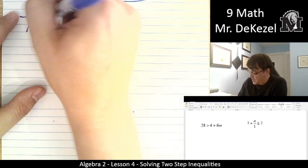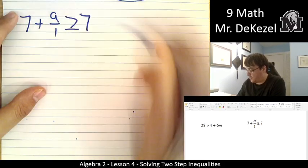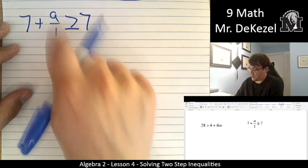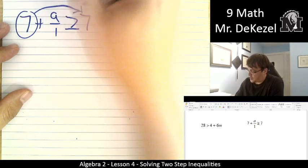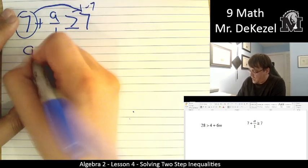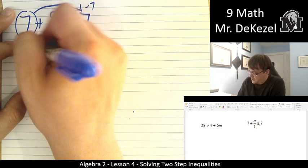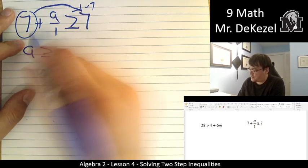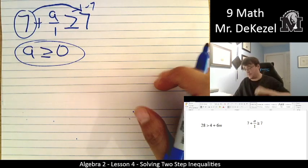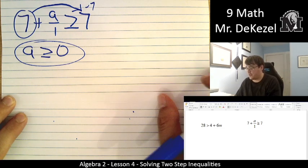So we have 7 plus a divided by 1 is greater than 7. Greater than or equal to 7. We're going to go ahead and try to get a all by itself. We're going to move the 7 across. Okay. I see where this is going. We're going to subtract 7. So a and a divided by 1 is just a. So a is greater than or equal to 7 minus 7 is 0. When something is divided by 1 or multiplied by 1, it's just itself. So there's not too much to do there.